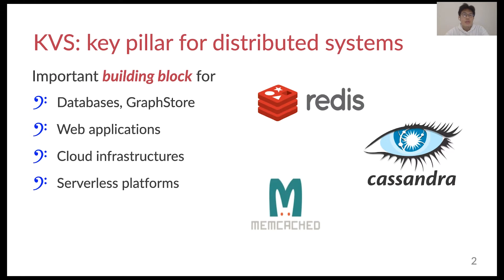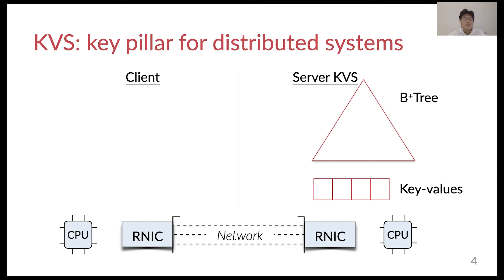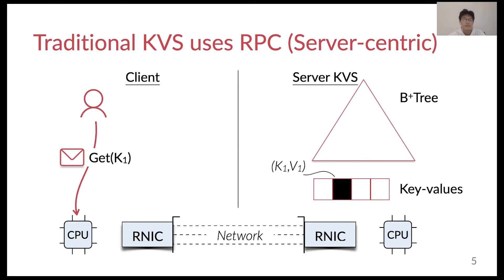Key-value store is an important building block in modern data centers, which serves as the storage backend for databases, web applications, and serverless platforms. A common way to design a key-value store is to use a B-tree index to store key-value pairs at the server. To serve requests from the outside world, the server is equipped with fast networking such as RDMA, which communicates with the clients. The traditional approaches use remote procedure call, which we call a server-centric design.